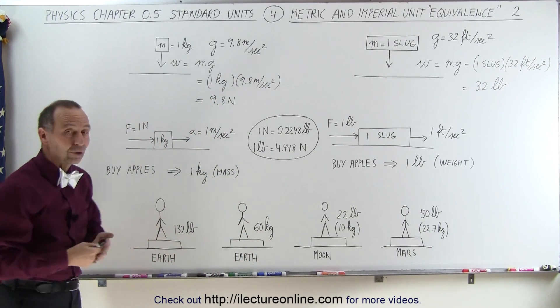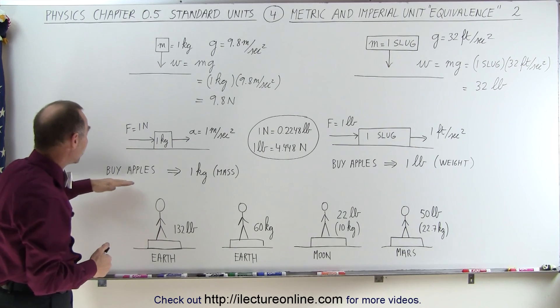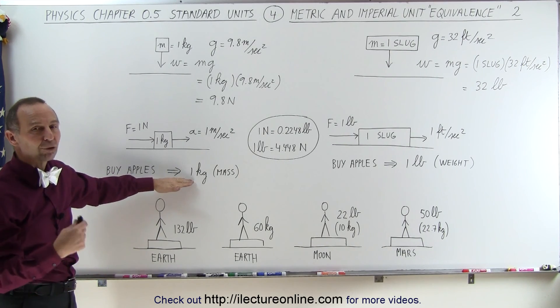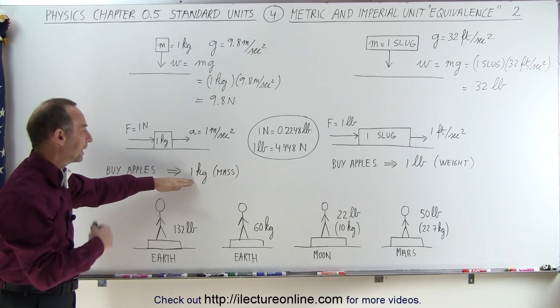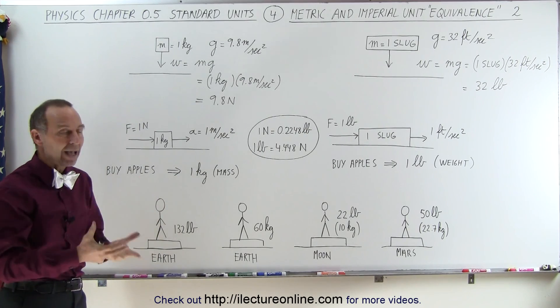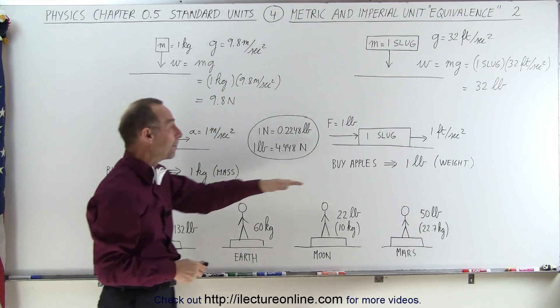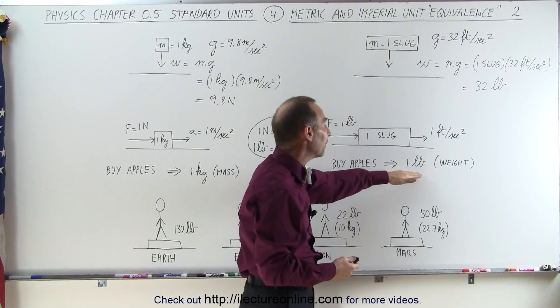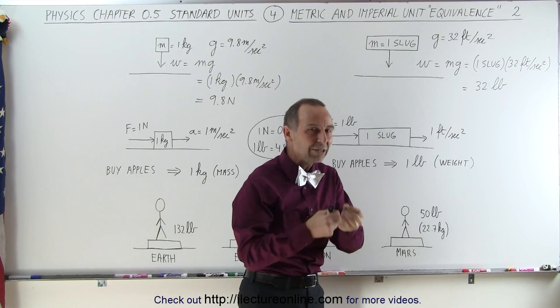What's interesting, though, is when we go to the supermarket, most places around the world, when you buy apples, you buy them by the kilogram. You pay for so much mass of apples. One kilogram of apples is a measure of mass. However, when you buy apples in the United States, you find that you'll pay for them by the pound. You pay for the weight of the apples, not for the mass of the apples.